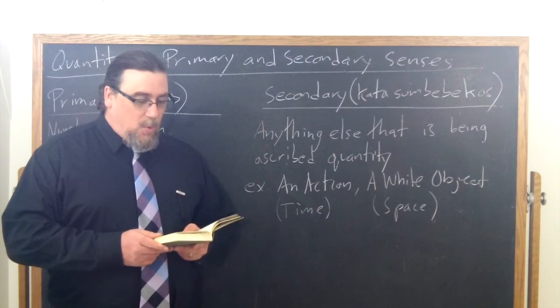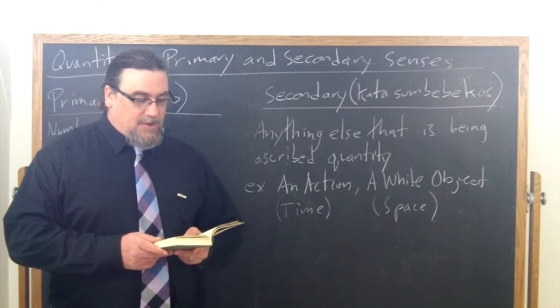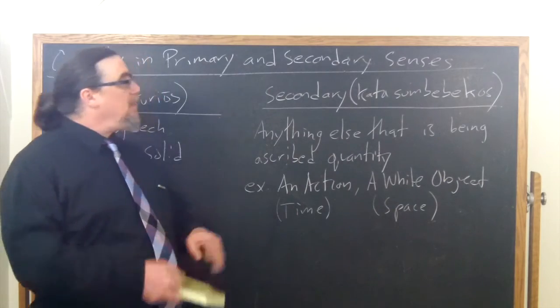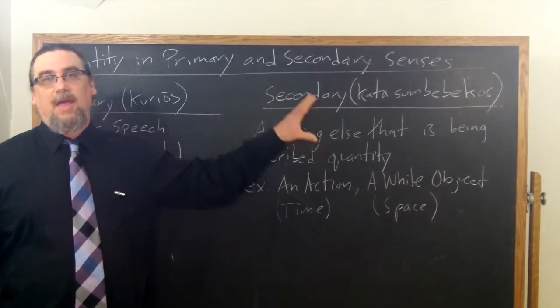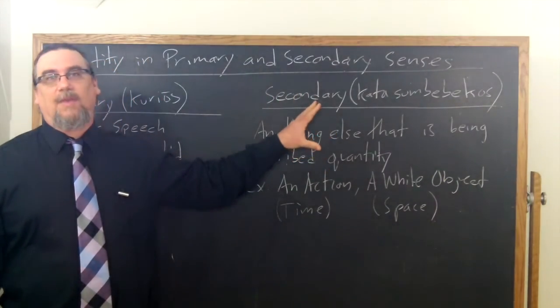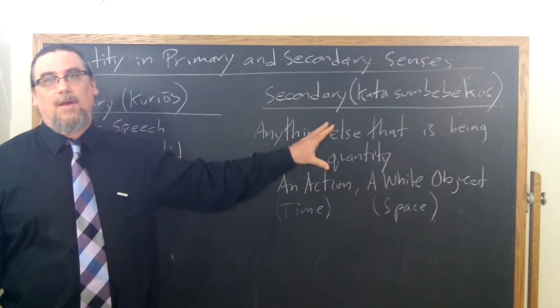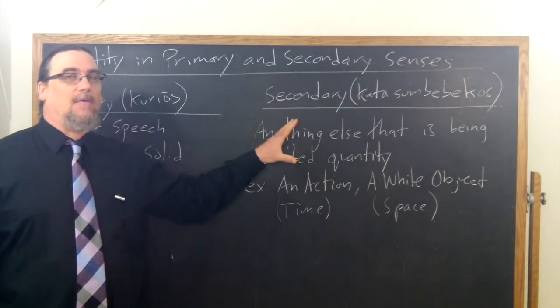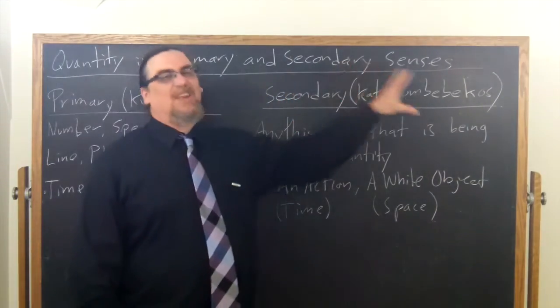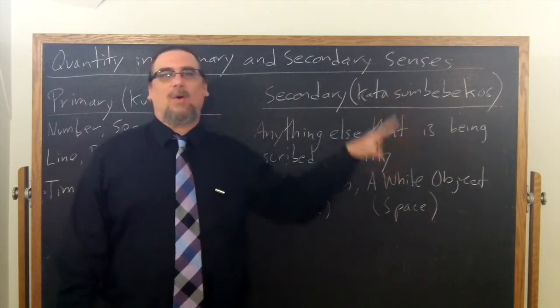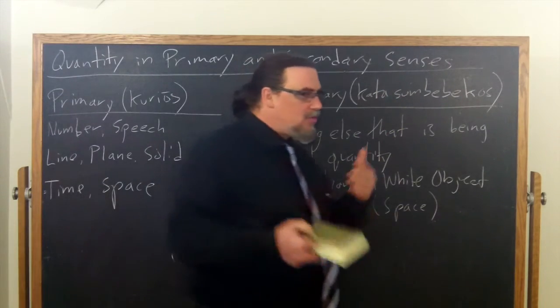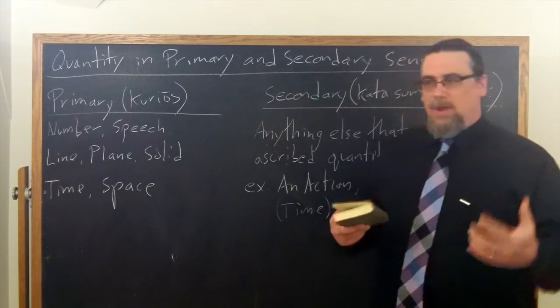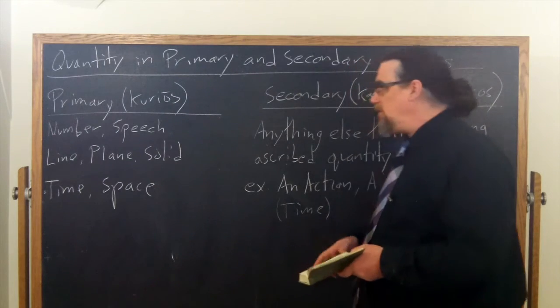It says, the name quantity cannot be given to such things as of their own right. That doesn't mean that we can't say that they are quantities or that they have a certain number. But it means that they don't have that in and of themselves. They are not primary. It's just accidental that they so happen to be that way. And this requires a little transformation in how we typically think of these things.